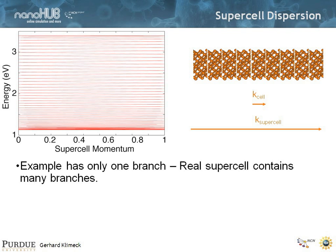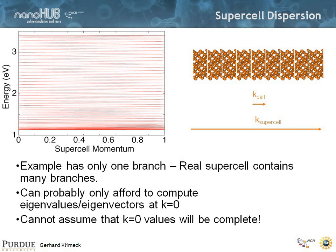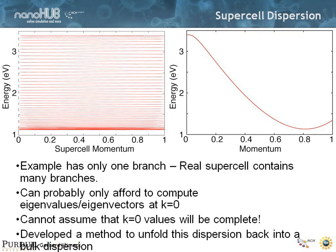So we developed a methodology to unfold from eigenstates computed at k equal to zero, to get back the whole dispersion. I'm not going to tell you all the details of the math, but show you that it can be done. We can also do this for systems where there are actual fluctuations — not just the ideal system, but disorder. That would mean there's some disorder on the dispersion, some sort of error bar, and the height of that error bar gives us an idea about the fluctuations in the system.